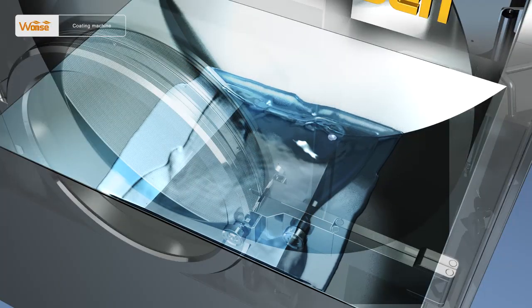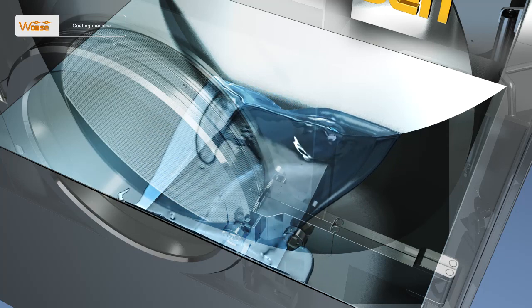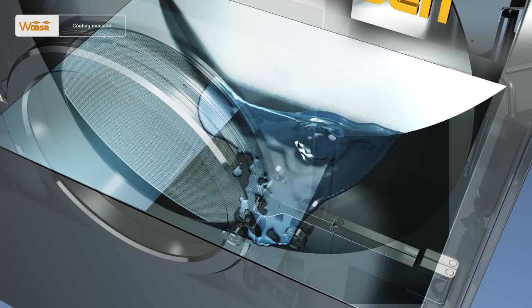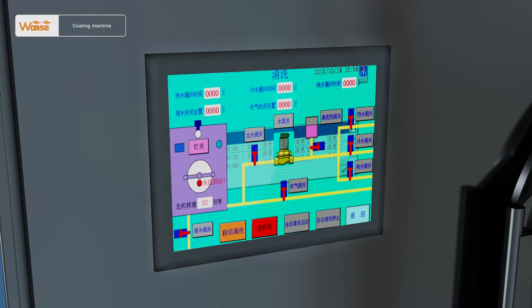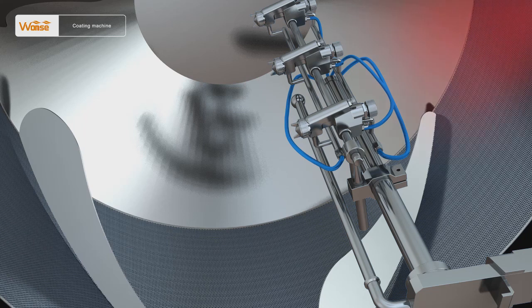When the water in the cleaning tank falls to the lowest water level, close the drain valve. Sixth, close all cleaning valves. Start the hot air cabinet to carry out drying after cleaning. After drying, carry out the next operation.